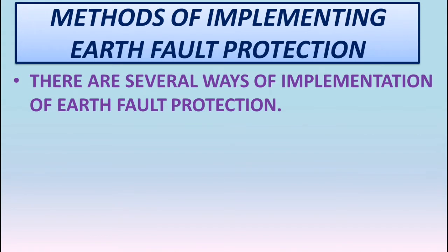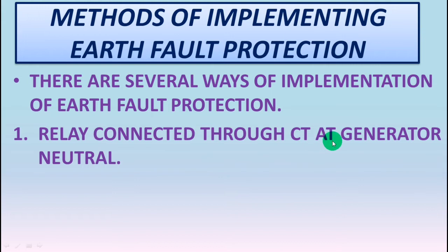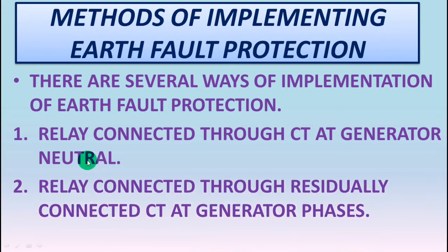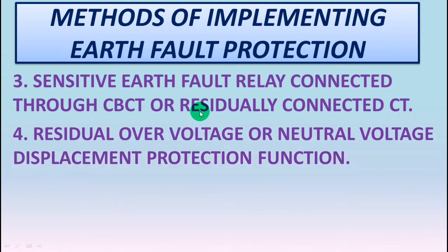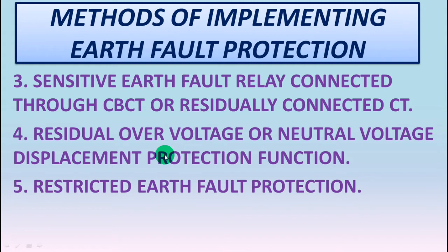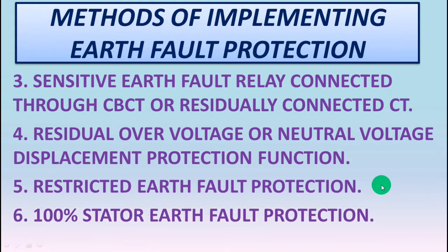Let us see the exact ways. First is relay connected through CT at generator neutral. Next is relay connected through residually connected CT at generator phases. These two are overcurrent earth fault detection techniques. Number three is sensitive earth fault relay connected through CBCT or residually connected CT — this is also overcurrent earth fault detection. Number four is residual overvoltage or neutral voltage displacement protection. Number five is restricted earth fault protection, which is basically differential earth fault protection. And number six is 100% stator earth fault protection, which is one of the undervoltage type protections.